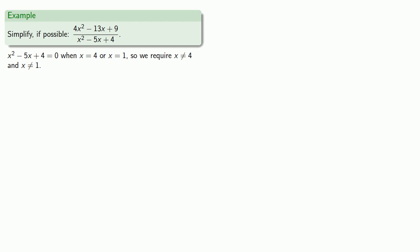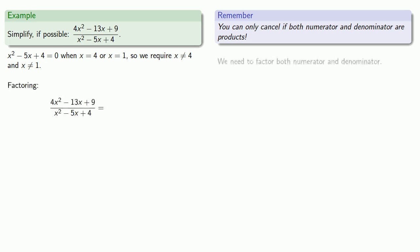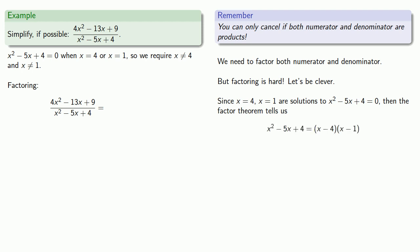So now we can try to simplify. But remember, we can only cancel if both numerator and denominator are products. And so this means we need to factor both numerator and denominator. But factoring is hard! Let's be clever about it. We've already determined that x equals 4 and x equals 1 are solutions to x squared minus 5x plus 4 equals 0. And so the factor theorem tells us that the denominator must factor as x minus 1 root times x minus the other root.